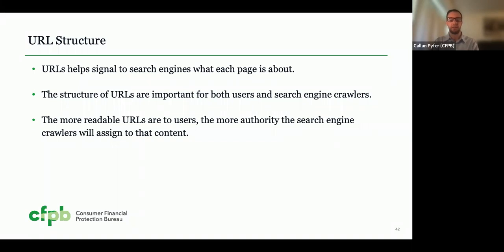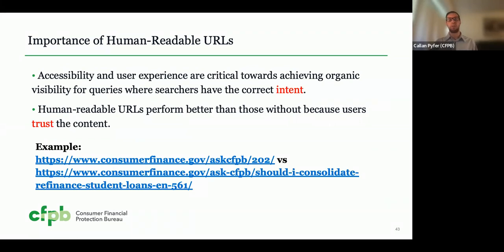URLs are huge. URLs help signal to the search engine what the page is about, and they're important not only for search engines but also for users. You want your URL to be understandable to a human — that way they trust the content is what they expect before clicking that link. Human-readable URLs are incredibly important for that trust. I have an example of two CFPB URLs: one ending in '-202' and one much more descriptive talking about consolidating and refinancing student loans. With the second URL, users trust that the content is about student loans and can already tell what it's about, versus '202' where you don't really know what that means.